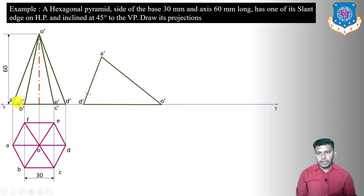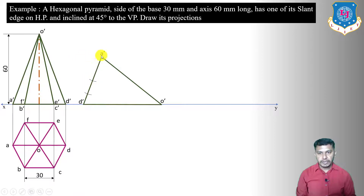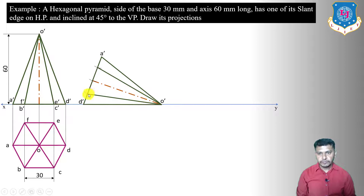Measure A' to E'/C' taking center at A', give an arc. Measure A' to center, give an arc. Measure A' to F'/B', give an arc, and connect these points to complete the axis. This gives B', F', C', E'. We have now copied the figure in the second stage with slant edge O'–D' on the XY reference line, meaning slant edge OD is on HP.